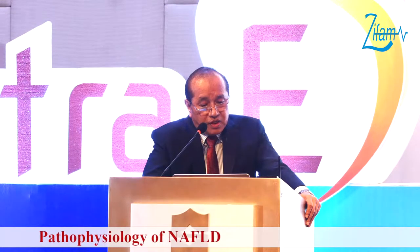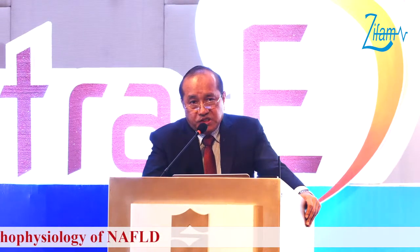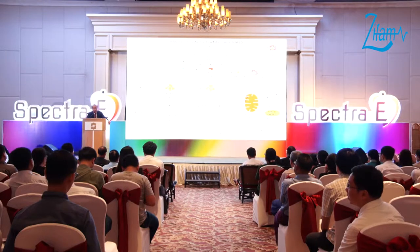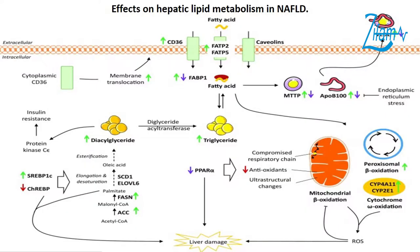Regarding de novo lipogenesis, it is the main lipid acquisition pathway for the hepatocyte. It starts from acetyl-CoA through malonyl-CoA, then palmitate, oleic acid, and then to diacylglycerol and triglycerides. During this breakdown, some of the intermediary metabolites like palmitic acid are pro-inflammatory and can cause liver damage.